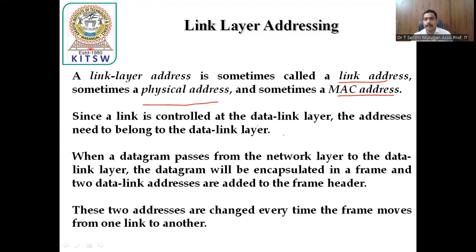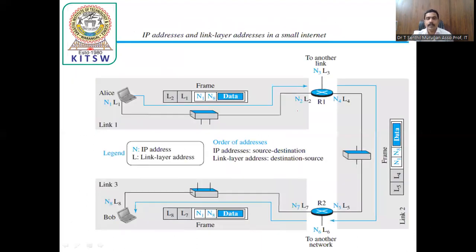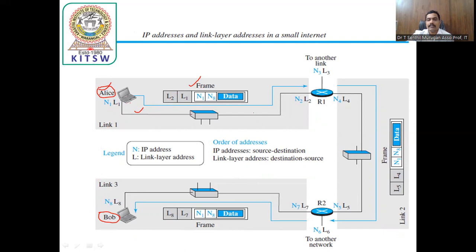These two addresses are changed every time the frame moves from one link to another. Each link itself has a source to destination. If it goes to the next device, the source and destination address may be changed. Looking at this diagram, node one — Alice — wants to send information to node eight — Bob. Alice is sending the frame with the information of link one and link two, because this device to this device is connected with link one, and this device to this device is connected to link two. These two addresses will be encapsulated in the frames with source address n1 and destination address n8 and the data. This is the packet extracted into framing — it adds the link addresses, and these addresses will reach the destination.